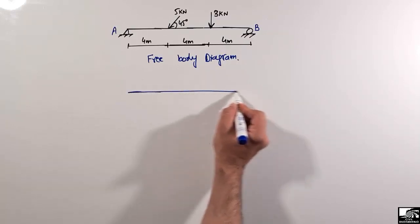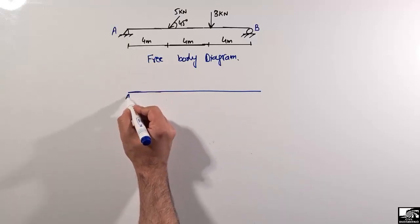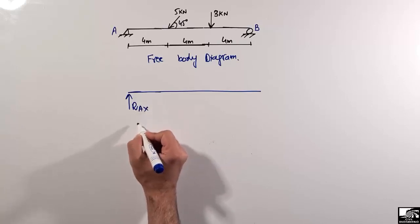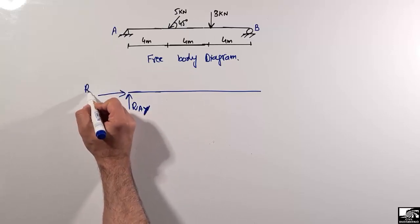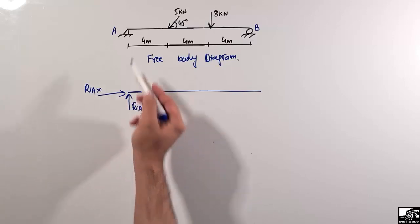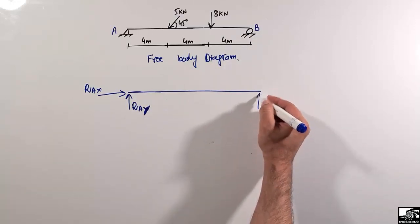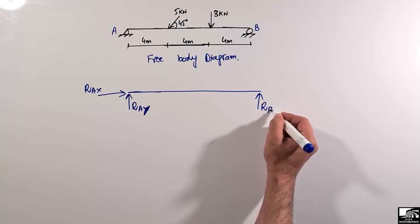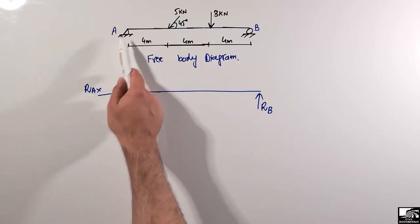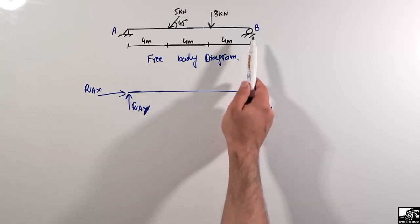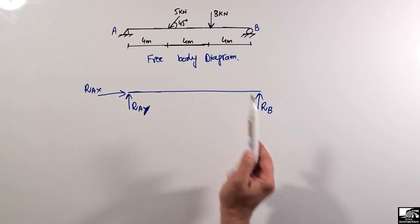We draw the beam line. The hinge support at A can take a vertical reaction RAy and also resist horizontal force RAx, so both components are shown in the free body diagram. The roller support at B can only take a vertical reaction RB. In the free body diagram, we replace the supports with their reaction components.